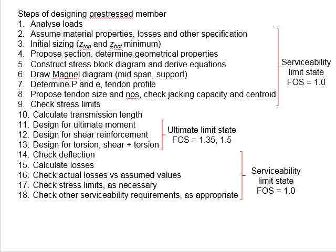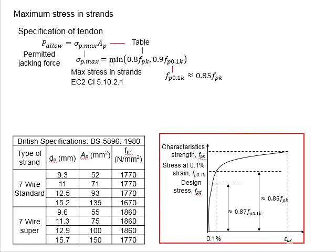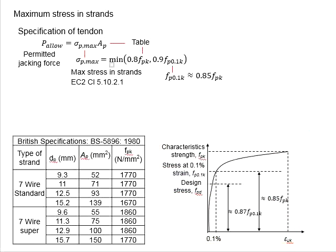Therefore, it is important for us to know the properties of the tendon and its specifications. For the properties of the tendon, it is important to know a few symbols. First is the characteristic strength, FPK.